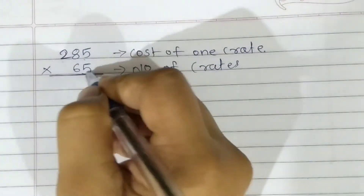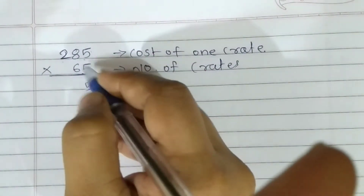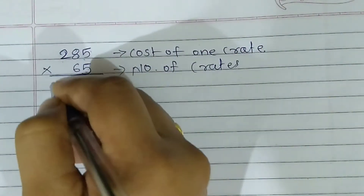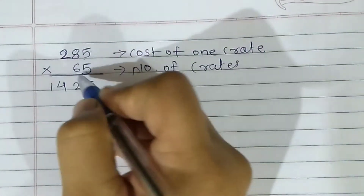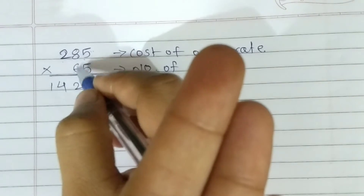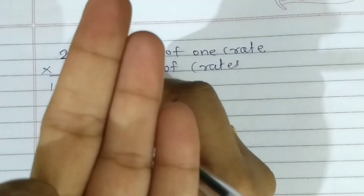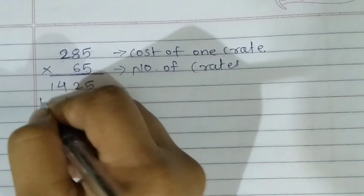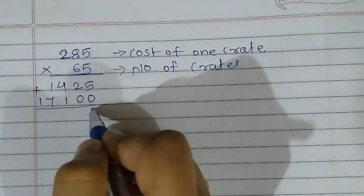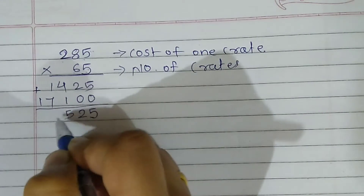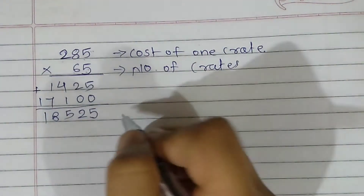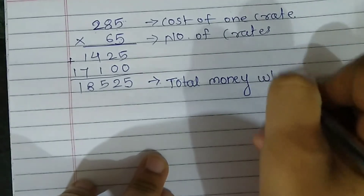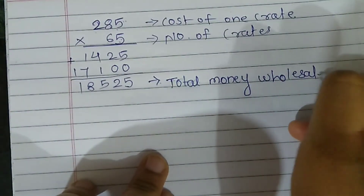Multiplying 285 by 65: 5 eights are 40, 40 plus 2 is 42, carry 4. 5 twos are 10, 10 plus 4 is 14. Now put 0 here. 6 fives are 30, carry 3. 6 eights are 48, 48 plus 3 is 51, carry 5. 6 twos are 12, 12 plus 5 is 17. Now add: the result is 18,525. So this is the total money the wholesaler pays.